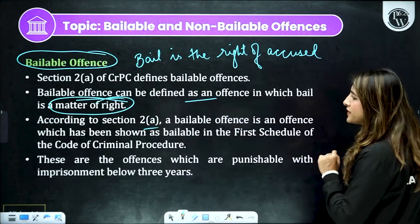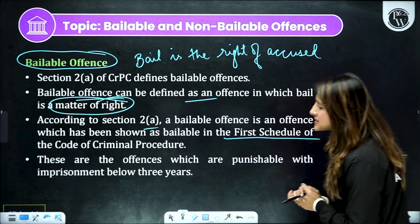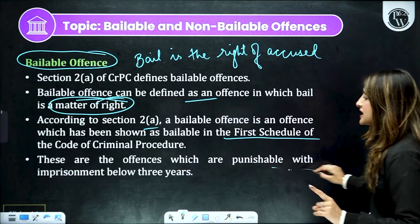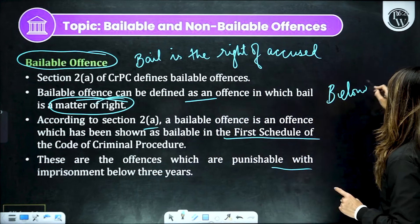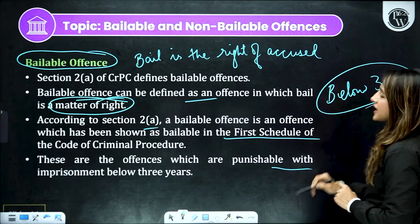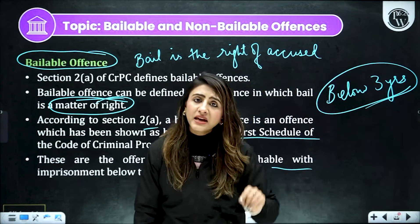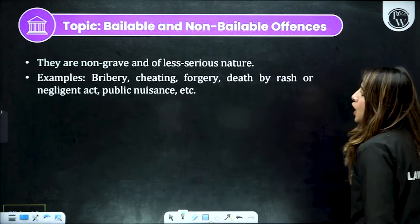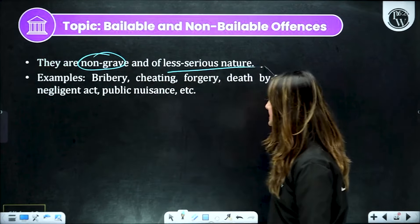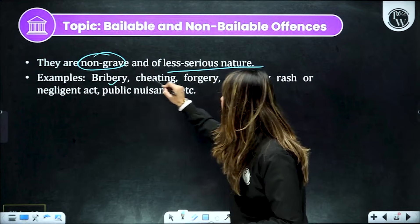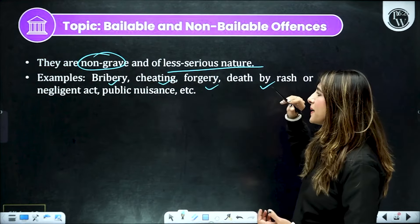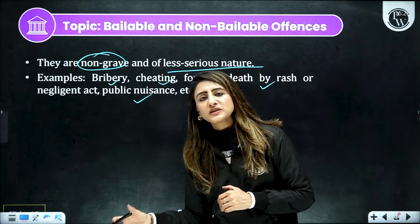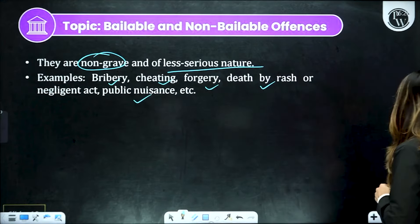According to section 2(a), bailable offense woh offenses hote hain jahaan par bail ke baare mein first schedule mein mention hai. Yahaan par yeh saare offenses aate hain bailable offenses mein jinnki punishment hoti hai below 3 years. Toh matlab automatically, koi bhi offense jo kiya gaya hai, agar uski punishment IPC mein 3 saal se kam ki hai, toh automatically woh bailable offense ki category mein chala jayega. Yahaan par non-grave offenses aate hain, less serious offenses aate hain. Kuch examples hain — jaise bribery, cheating, forgery, death by rash or negligent act, and public nuisance. In sabhi ki punishment less than 3 years hai, toh ye bailable offense mein jayenge — bail milna haq hai.